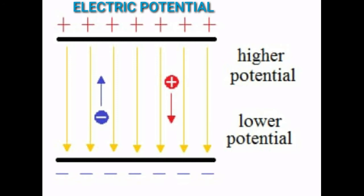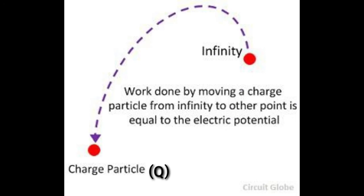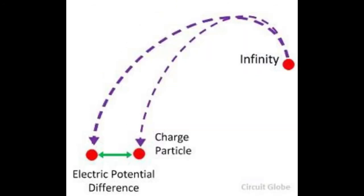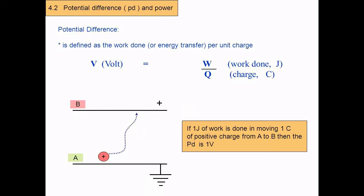Electric potential. The electric potential at a point is defined as the amount of work done in moving a unit positive charge from infinity to that point against the electric force. Electric potential difference. The electric potential difference between two points is defined as the amount of work done in moving a unit positive charge from one point to another point against the electric force. Suppose you have moved a charge Q from a point A to another point B, let W be the work done. Then the potential difference between points A and B is given by: potential difference V = W/Q. Potential difference is also equal to the difference in electric potential of these two points. If V_A and V_B represent the electric potential at the points A and B respectively, then V = V_A - V_B if V_A > V_B.